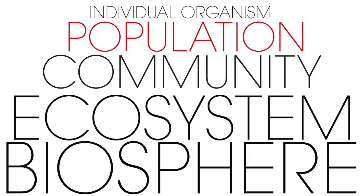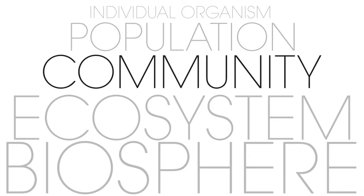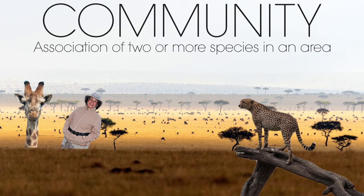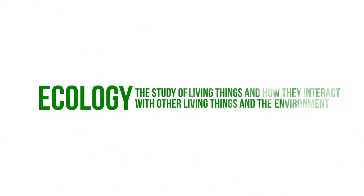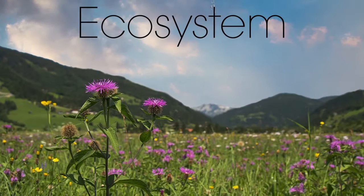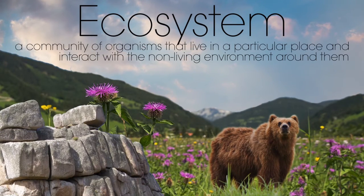Individual organisms and populations only deal with one living thing or a group of the same species. The next step in organizing living things is a community. A community is the association of two or more species in an area, meaning it's different types of living things interacting with each other. Remember that ecology deals with both living things and the non-living environment around them. So let's take a look at an ecosystem. An ecosystem is a community of organisms that live in a particular place and interact with the non-living environment around them.